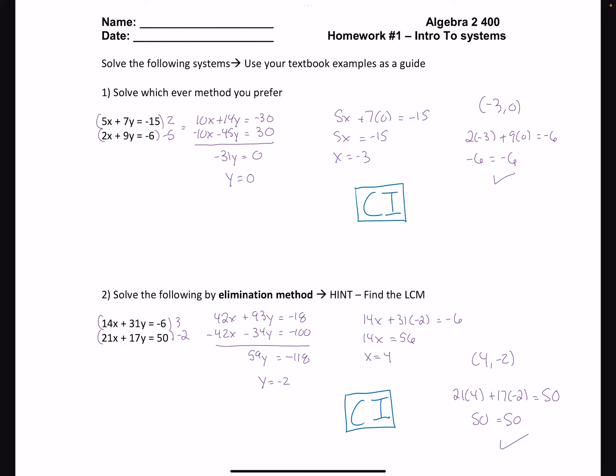Now it wouldn't have mattered if we subbed into the top or the bottom equation, we would have got negative 3 also. Finish the problem off, check, make sure it works in both equations, and then label our answer. We have a consistent, independent answer, because we have a one point solution.